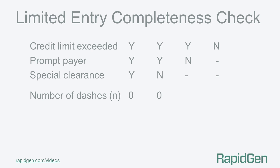We count up the number of dashes in each rule. The first two rules don't have any dashes, so zero for those two rules. The third rule has one dash, and the last rule has two dashes. We then calculate two to the n for each rule: for the first two rules, two to the zero is one; for the third rule, two to the one is two; and for the last rule, two squared is four.